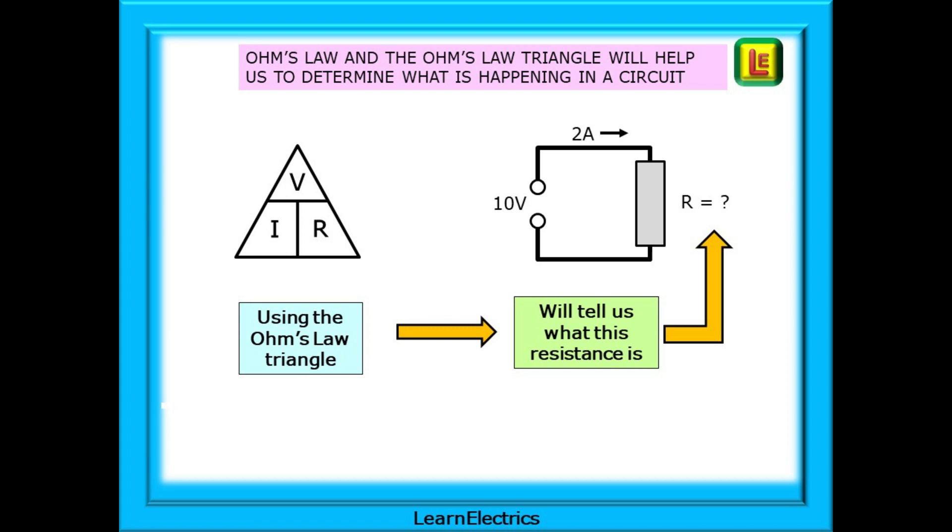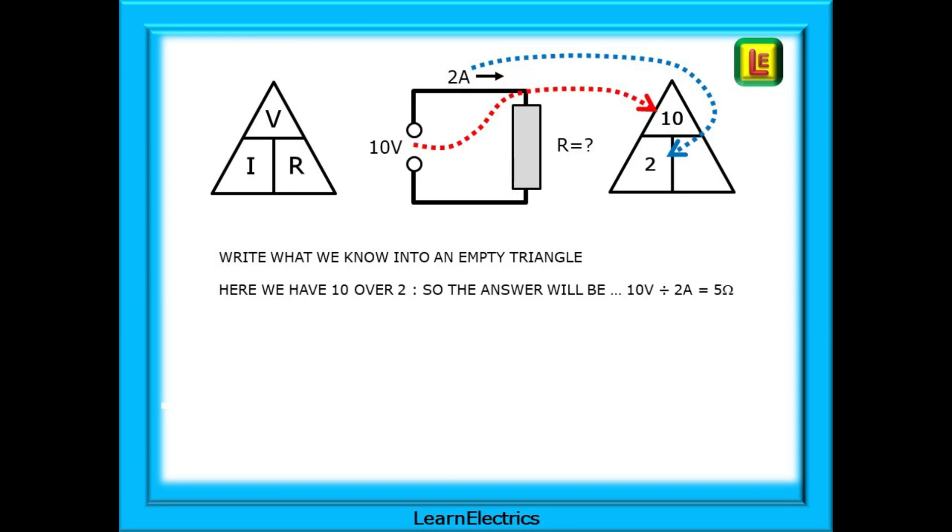The Ohm's Law triangle must be understood. It will help us to determine what is happening in a circuit. In this example shown here, if we know the circuit voltage and the current flowing, we can use Ohm's Law to calculate the resistance. You should all be familiar with Ohm's Law, but a quick refresher will not hurt.